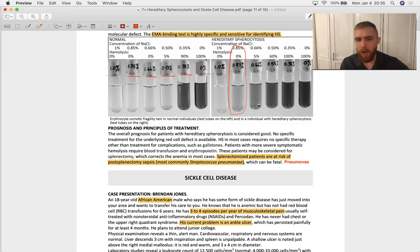So the more hypotonic you get, again the more water wants to go into the cell. As you can see normal cells, you can visibly see the hemolysis at a lower concentration of sodium chloride, so it takes a more hypotonic solution to get those normal cells to pop.